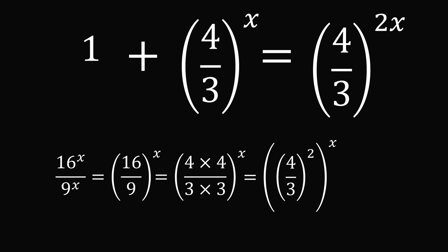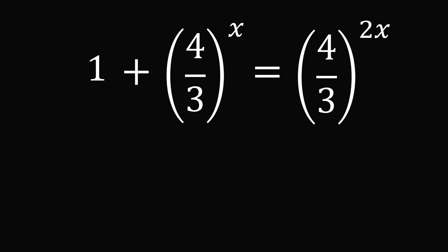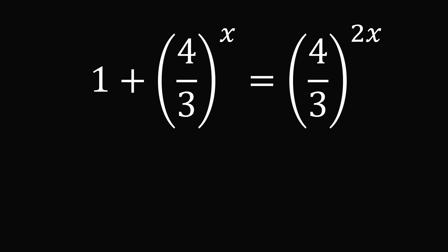We have now simplified the equation to another form. Let's take a closer look at it. 1 + (4/3)^x = (4/3)^(2x).